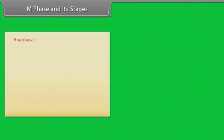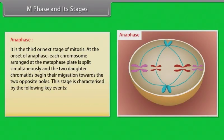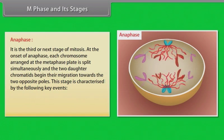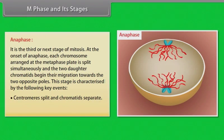The next stage of mitosis is Anaphase stage. It is the third stage of mitosis. At the onset of anaphase, each chromosome arranged at the metaphase plate is split simultaneously and the two daughter chromatids begin their migration towards the two opposite poles. This stage is characterized by centromere split and chromatids separate; chromatids move to opposite poles.